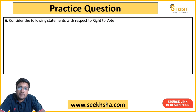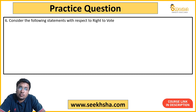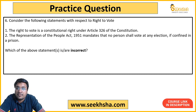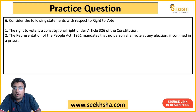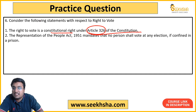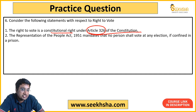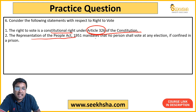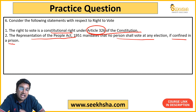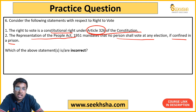Sixth question is on the Right to Vote, which was in the news because of debate about whether people in jail have the right to vote. Statement 1 says the right to vote is a constitutional right under Article 326 of the Constitution. Statement 2 says the Representation of People Act 1951 mandates that no person shall vote at any election if confined in a prison. You need to identify which statement is incorrect. Be very careful about correct vs. incorrect — many answers depend on this distinction.